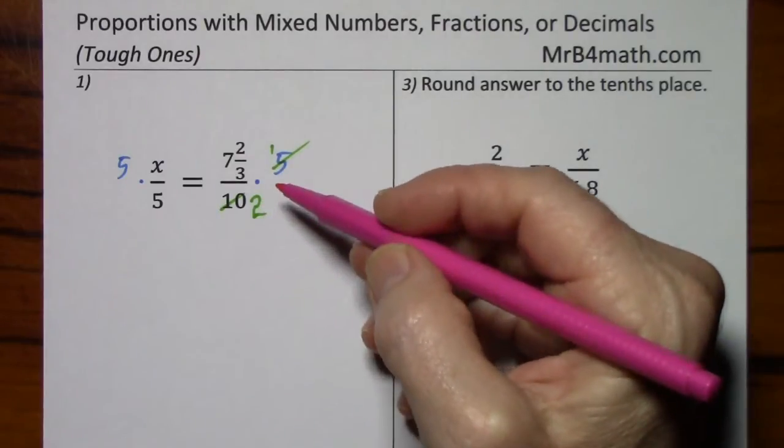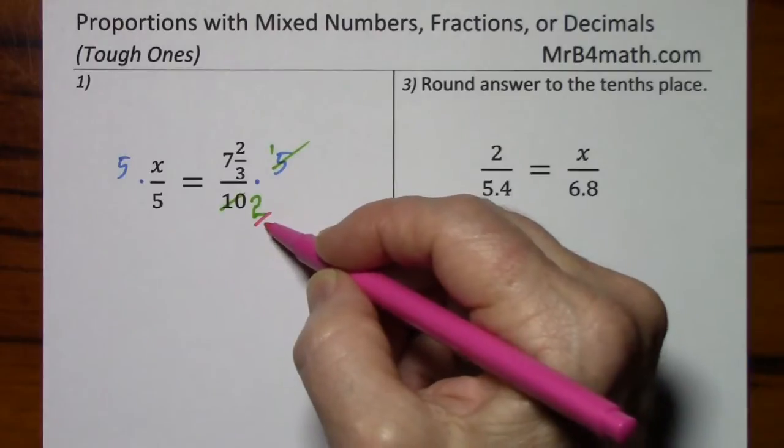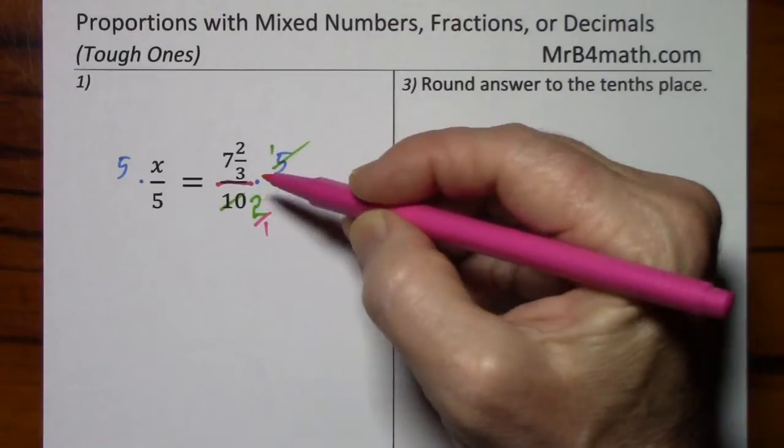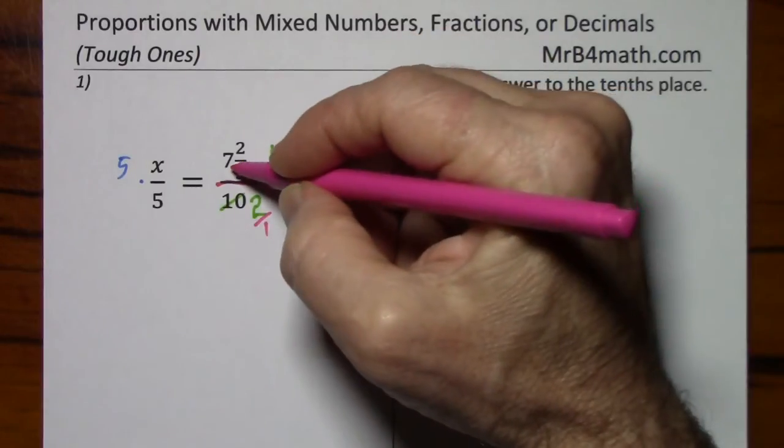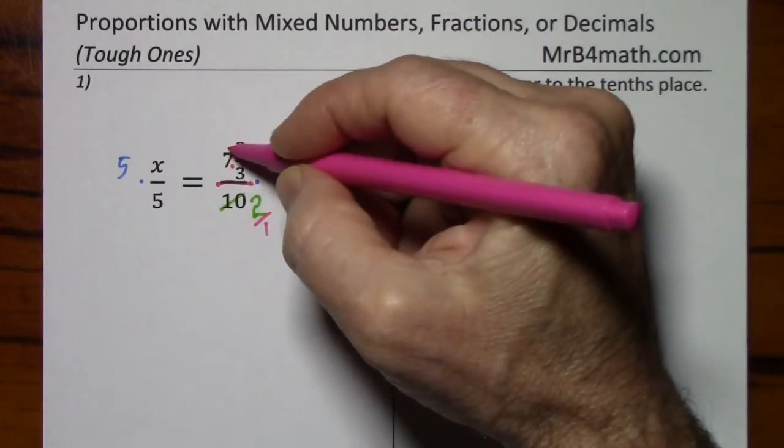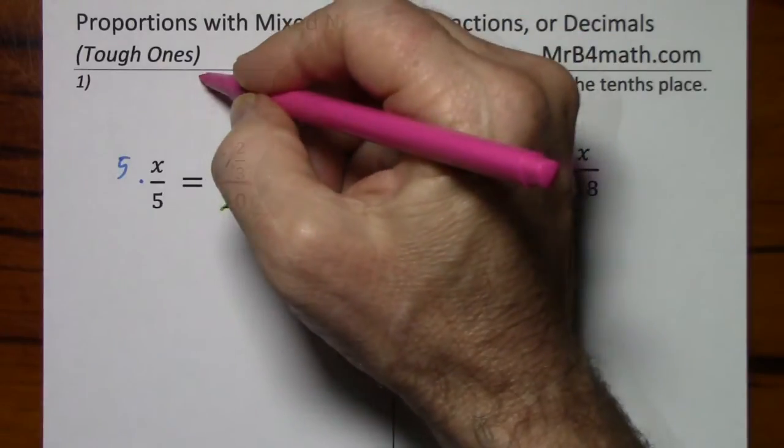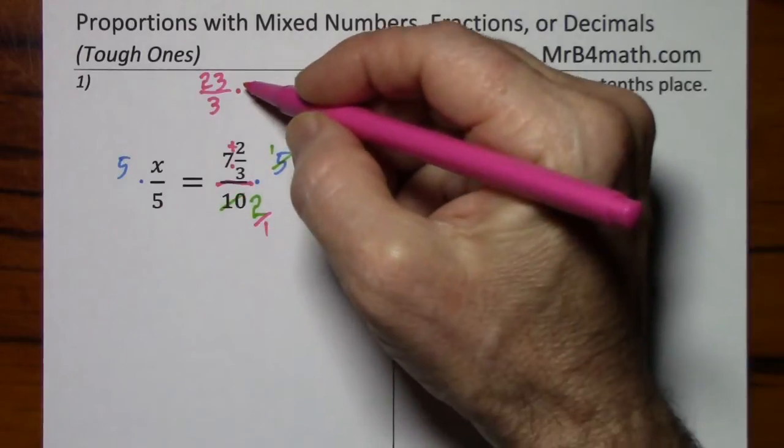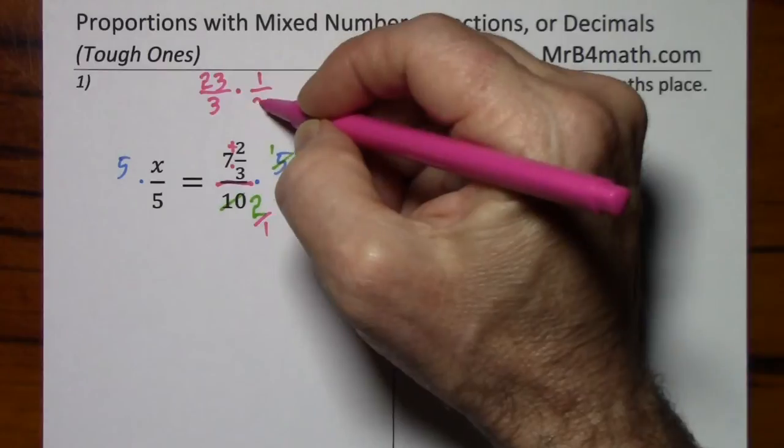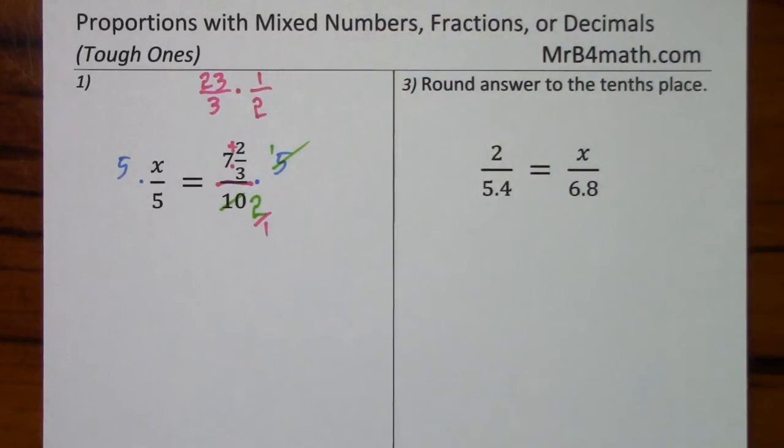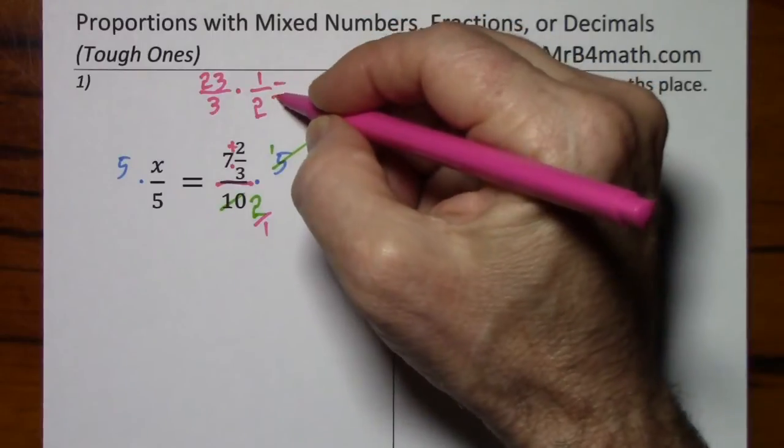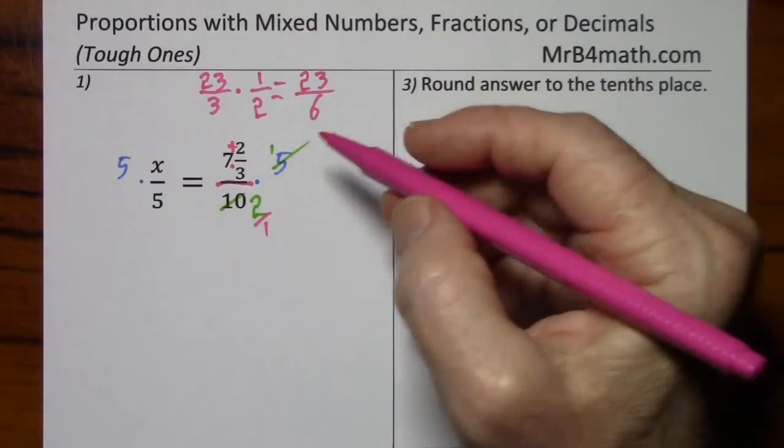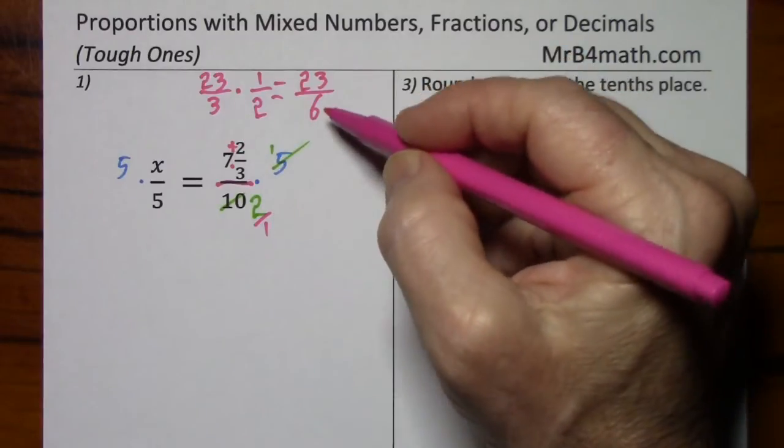And now we can just clean this up. This is 2 over 1. So we have 7 and 2 thirds divided by 2 over 1. So we'll make this improper. That's 21, 23 thirds. And if we divide by 2 over 1, we multiply by its reciprocal, or 1 half. Nothing will cancel, so we simply multiply straight across. So we've rewritten all this as 23 sixths.